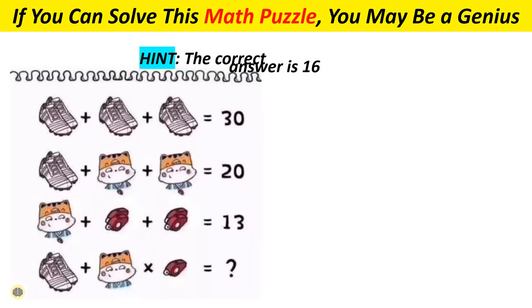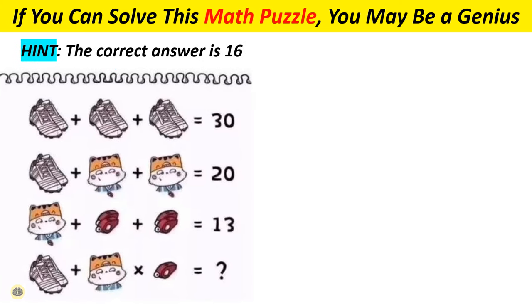For the sake of explanation, we will call the shoes S, the cat C, and the whistle W.